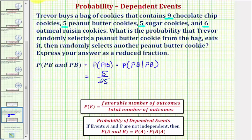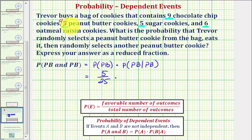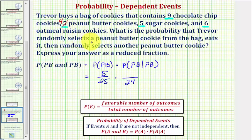Now to update the information: after eating one, there are only four peanut butter cookies remaining in the bag. To determine the probability of selecting another peanut butter cookie, given a peanut butter cookie has already been selected, there are now only twenty-four total cookies. So the probability of selecting a peanut butter cookie the second time would be four twenty-fourths.